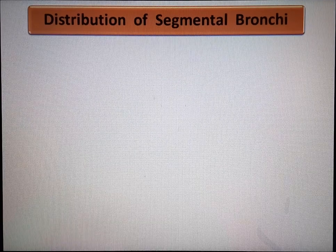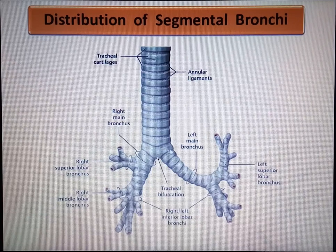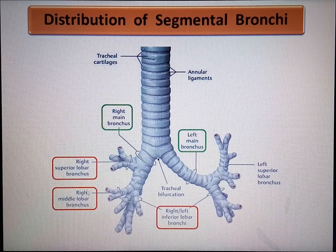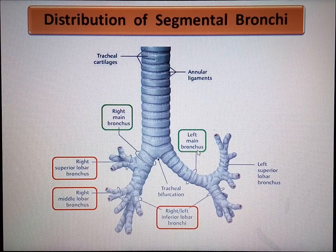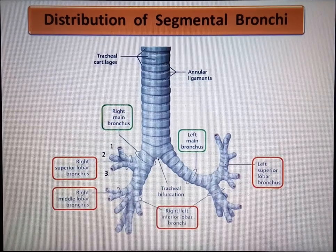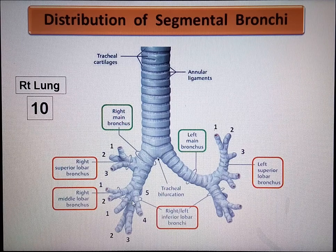Let's see the distribution of segmental bronchi in each lung to understand the distribution of bronchopulmonary segments. The trachea bifurcates at the T4 vertebral level into two principal bronchi, right and left. The right principal bronchus gives rise to three lobar bronchi — upper, middle and lower — whereas the left principal bronchus gives rise to two lobar bronchi, upper and lower. On the right side, the upper lobar bronchus gives rise to three segmental bronchi, the middle lobe to two, and the lower lobe to five, making ten segmental bronchi in the right lung.